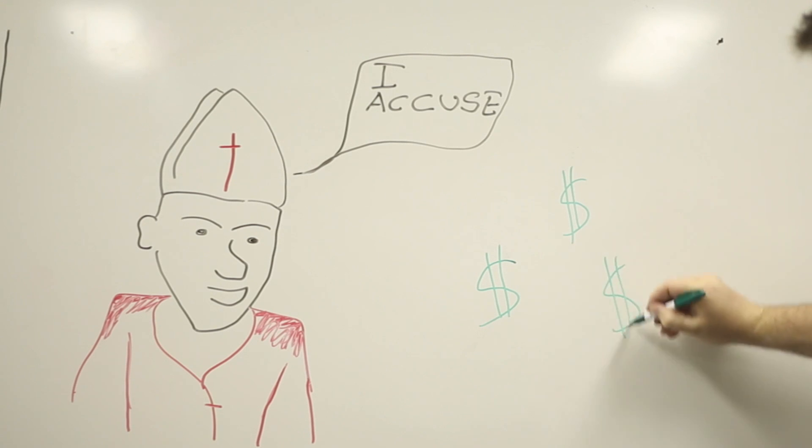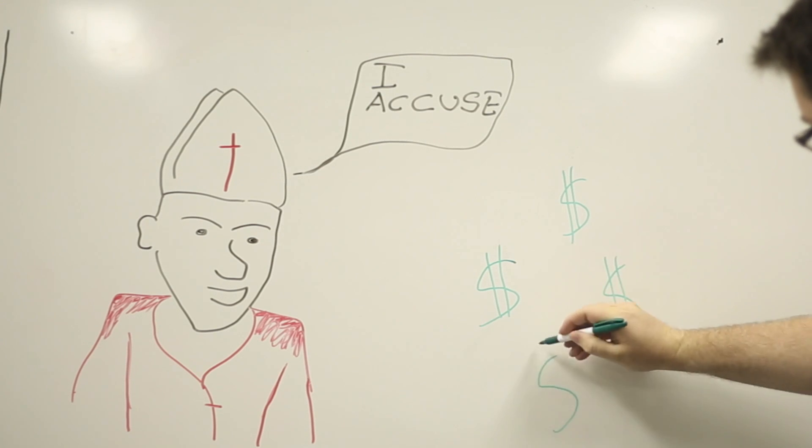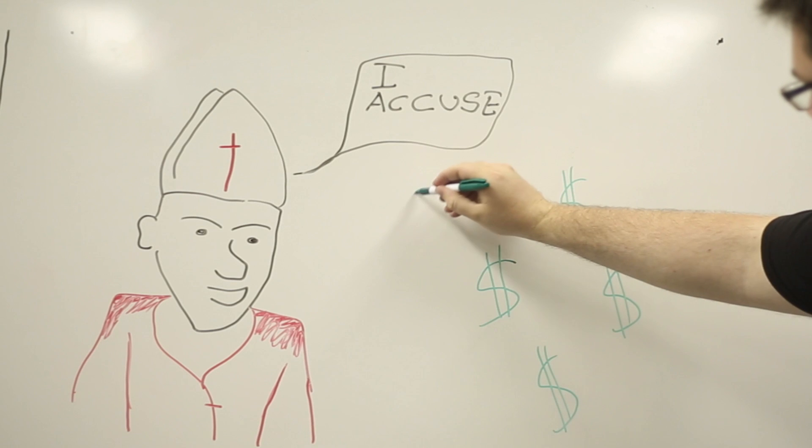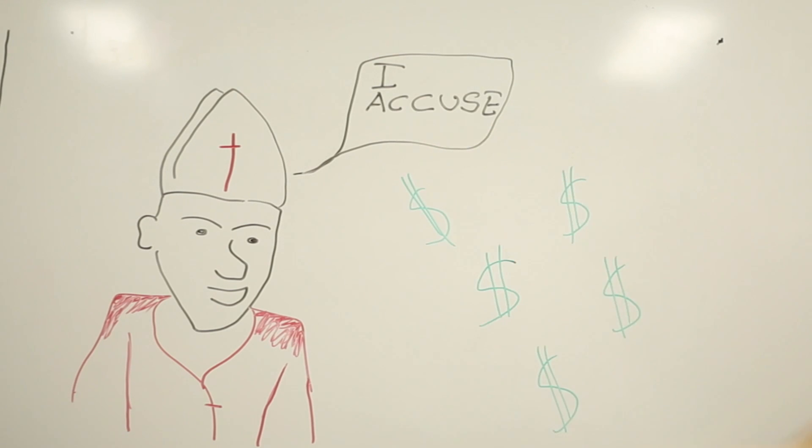In the 11th century, simony was a very serious problem in the Latin Church. Humbert presumed that the problem was equally severe in the Greek Church, but in fact, it was not.